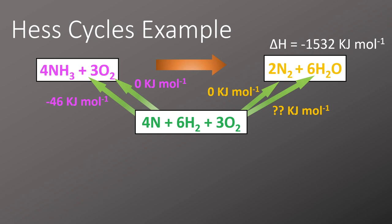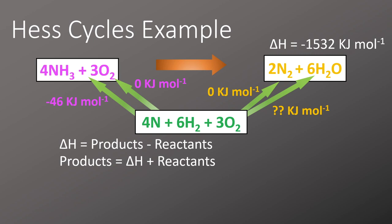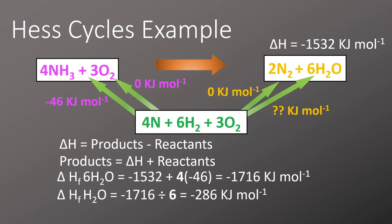It can be easier to rearrange the equation before you put any numbers in. When we add the numbers in we need to remember to multiply the value for ammonia by 4 as we have 4 NH3 present in the reactant side. And in the last step of this reaction we need to divide the answer by 6 because we make 6 waters in the product side. Also don't forget to add on your units.